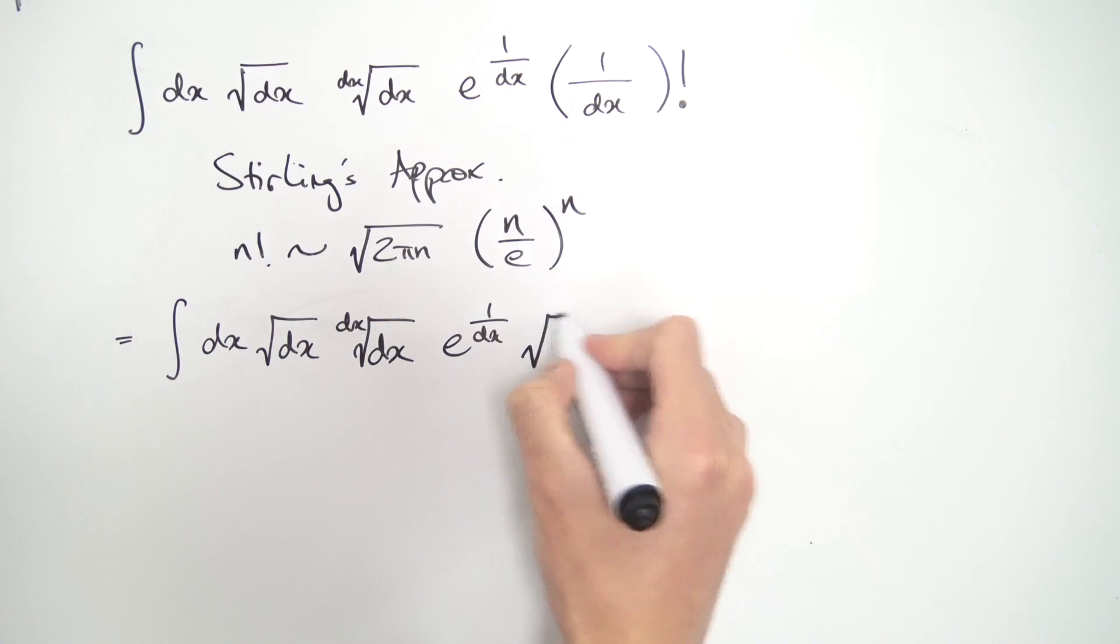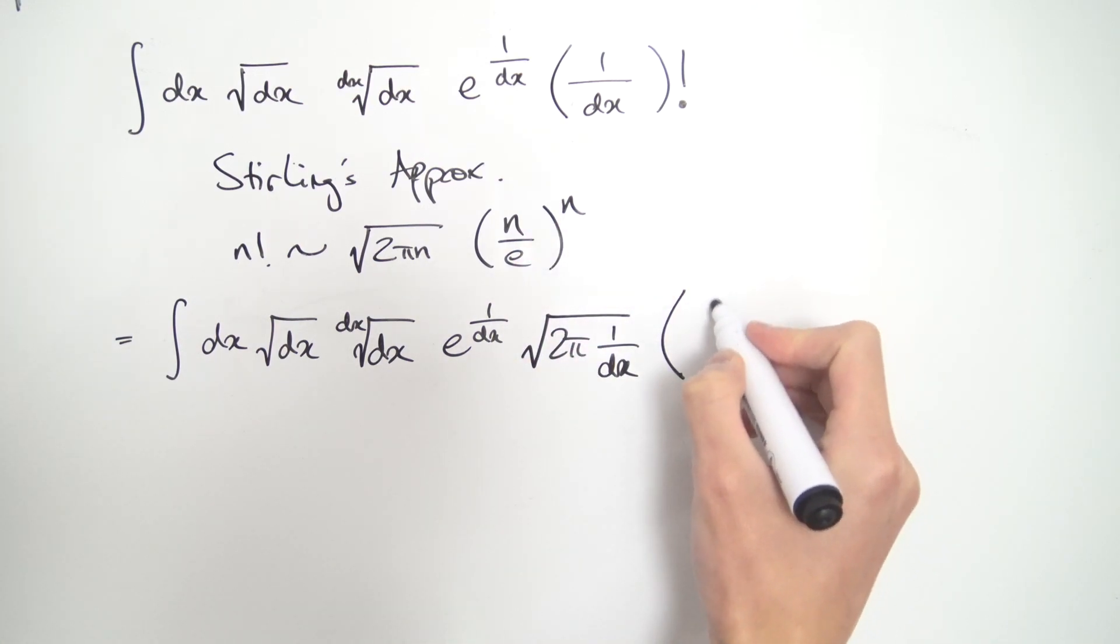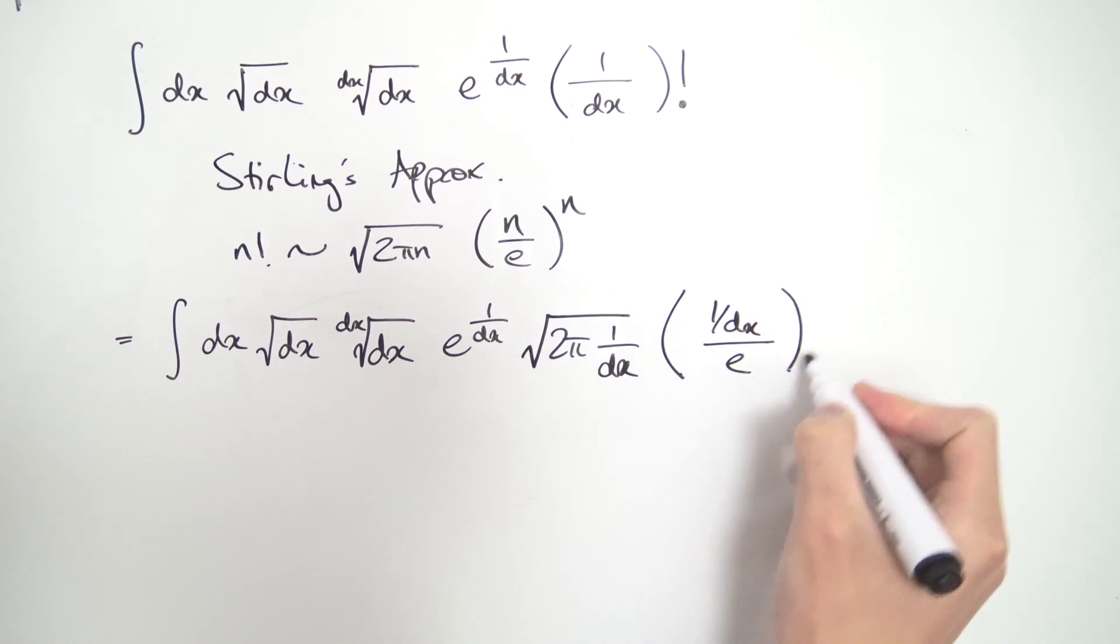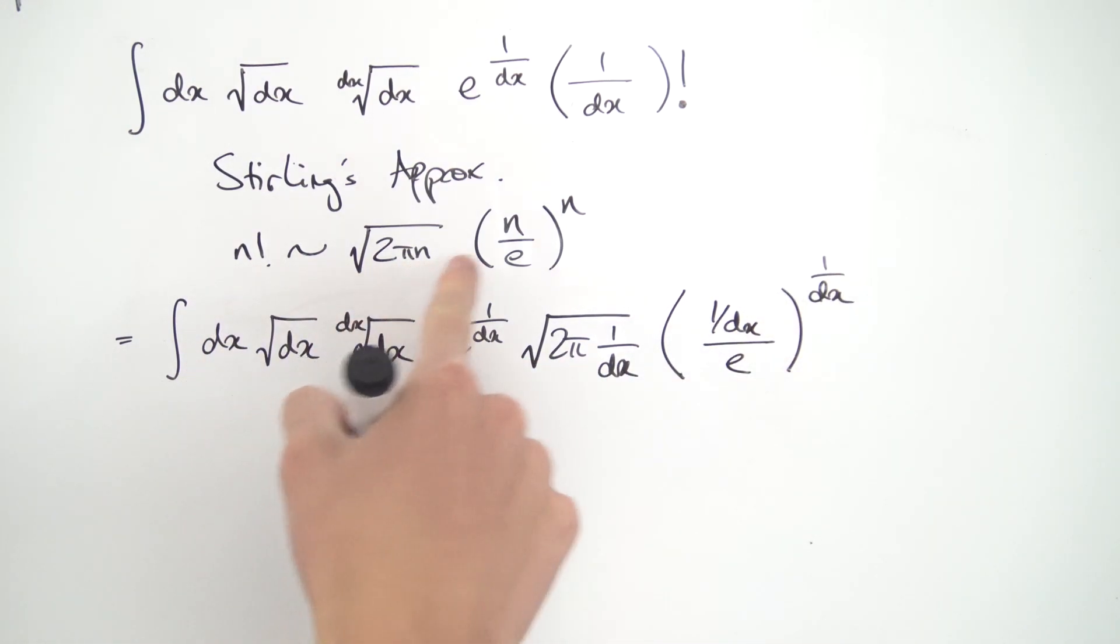So we're going to have the square root of 2 pi, n becomes 1 over dx. And then we also have n, that's our 1 over dx from before, divided by e, raised to the 1 over dx power. So I essentially just replaced all these n's here with 1 over dx. And now a couple things should hopefully simplify.